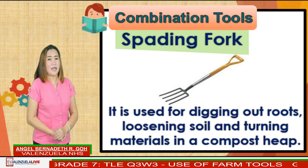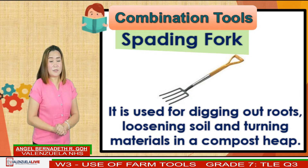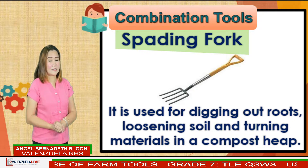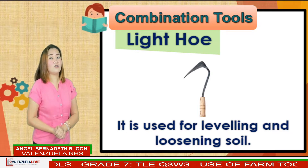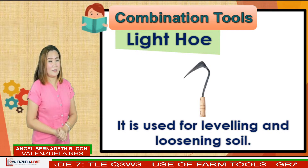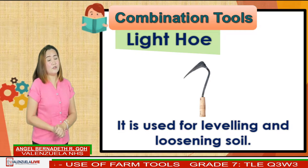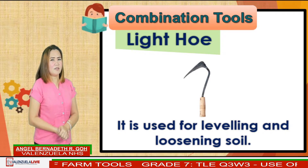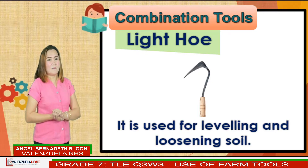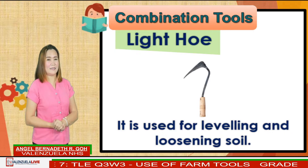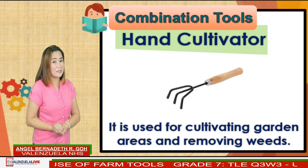Spading fork is used for digging out roots, loosening soil, and turning materials in a compost heap. Light hoe is used for leveling and loosening soil and also for digging furrows for planting. Hand fork is used for loosening hard soil, lifting, turning, and mixing compost with the soil. It is also used for removing weeds, lifting, and transplanting plants and seedlings.